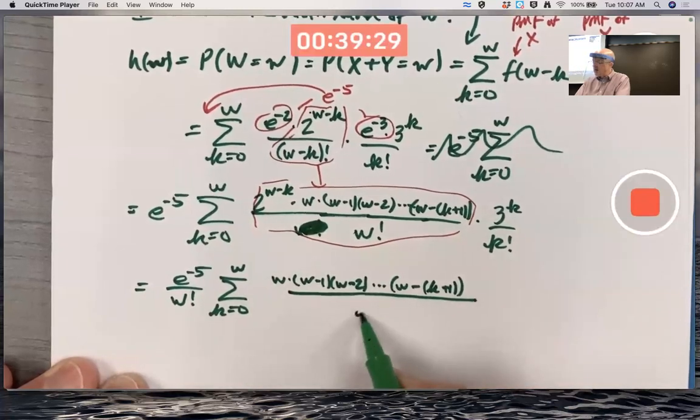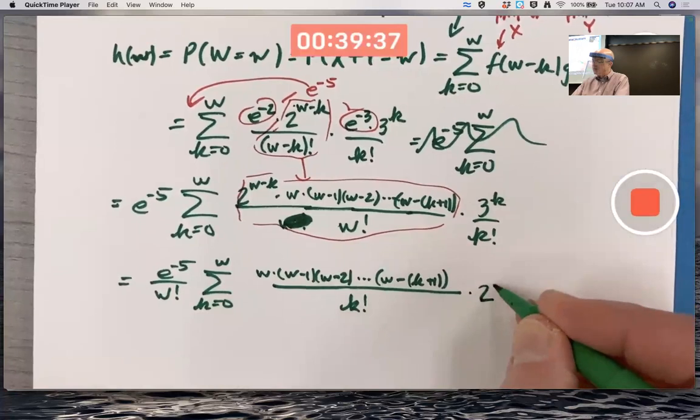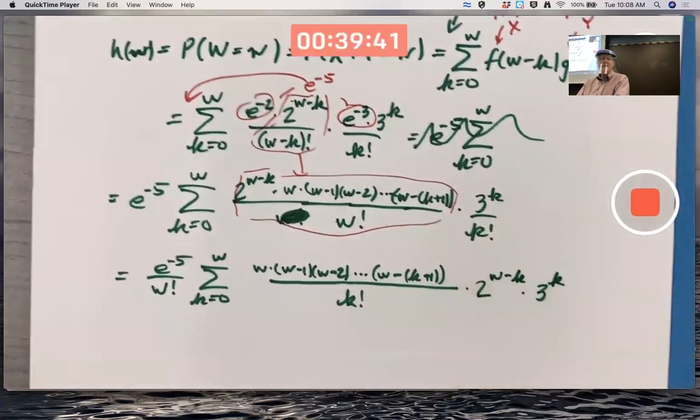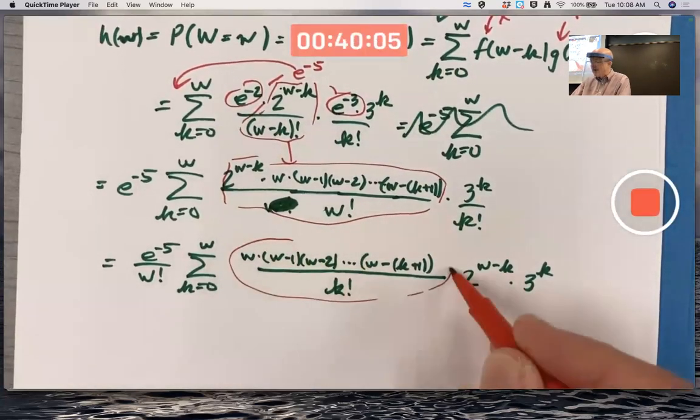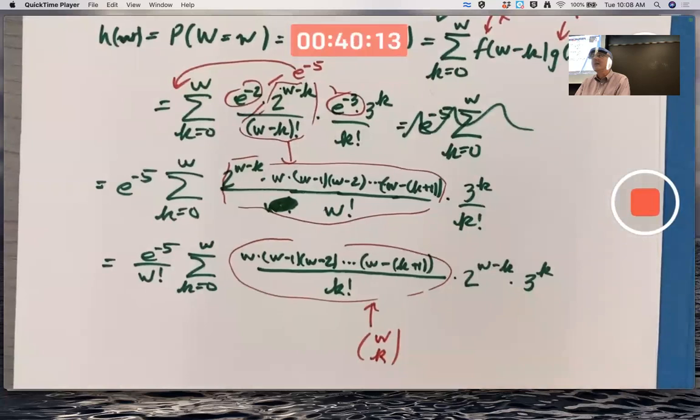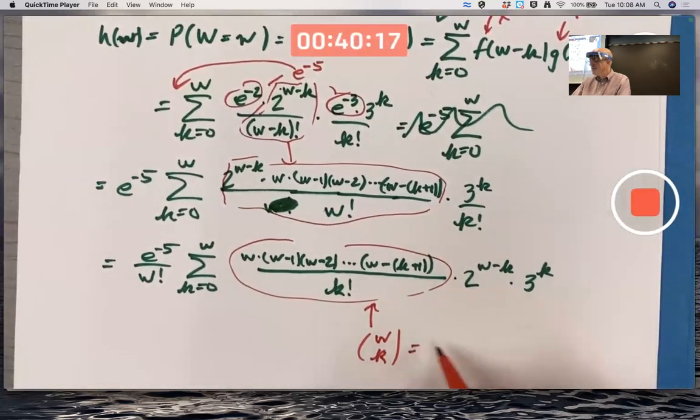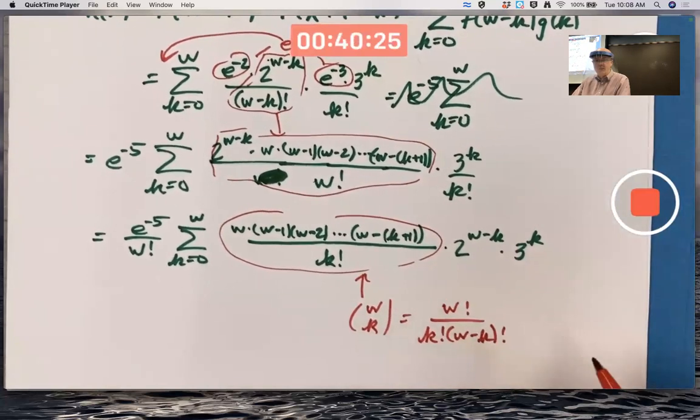Put this all over K factorial. And then write two to the W minus K here and three to the K there. Does anybody feel like they know where I'm going with this? Anybody have a gut instinct as to what fundamental fact that you have learned about in the past that I'm going to use here to simplify this a lot? Binomial theorem. Binomial theorem. This thing right here is W choose K.